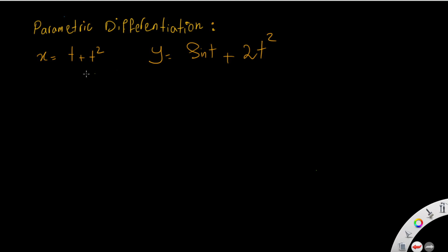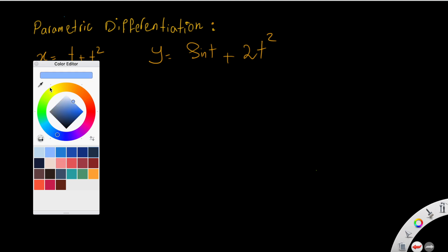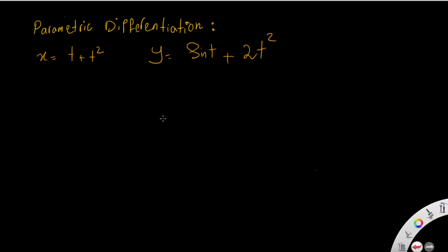Here, t is called the parameter of the equation, and as you can see, x and y are both defined in terms of t. In order to differentiate such parametric expressions, we need to use the chain rule, because y is not directly defined in terms of x.